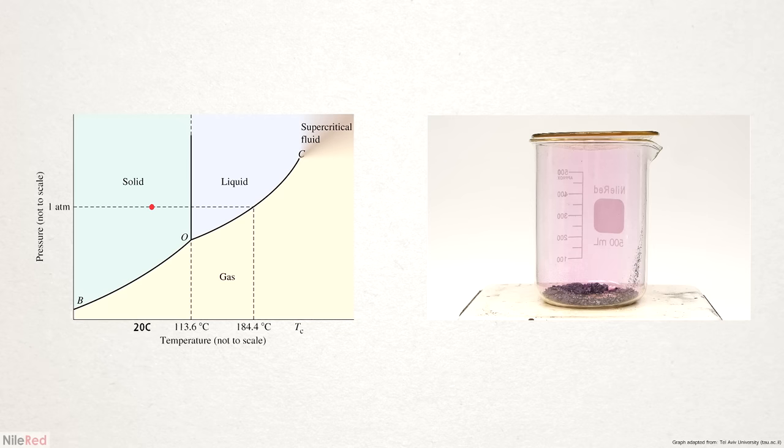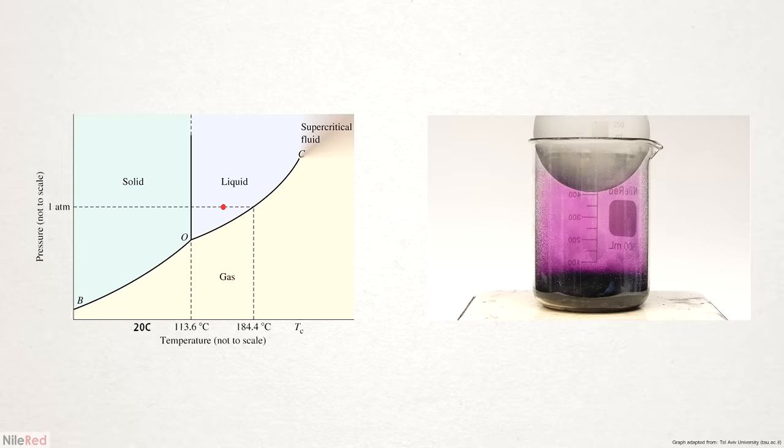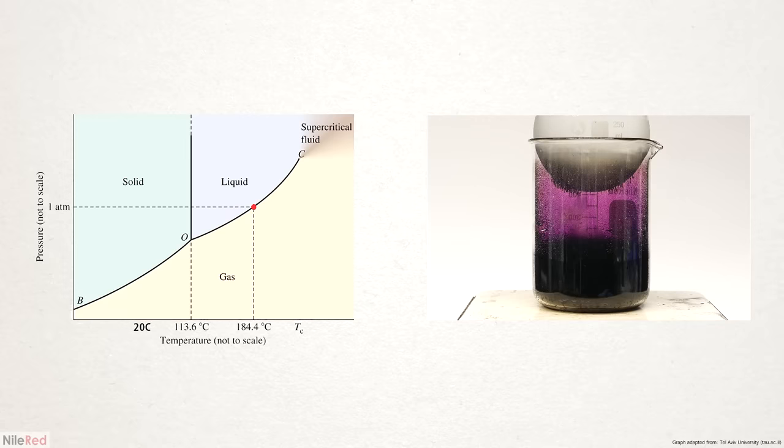When the temperature's increased, the sublimation rate also increases until we reach the melting point at around 114°C. Then, if we keep heating and evaporating it, we'll eventually reach the boiling point, which is exactly what we saw earlier.